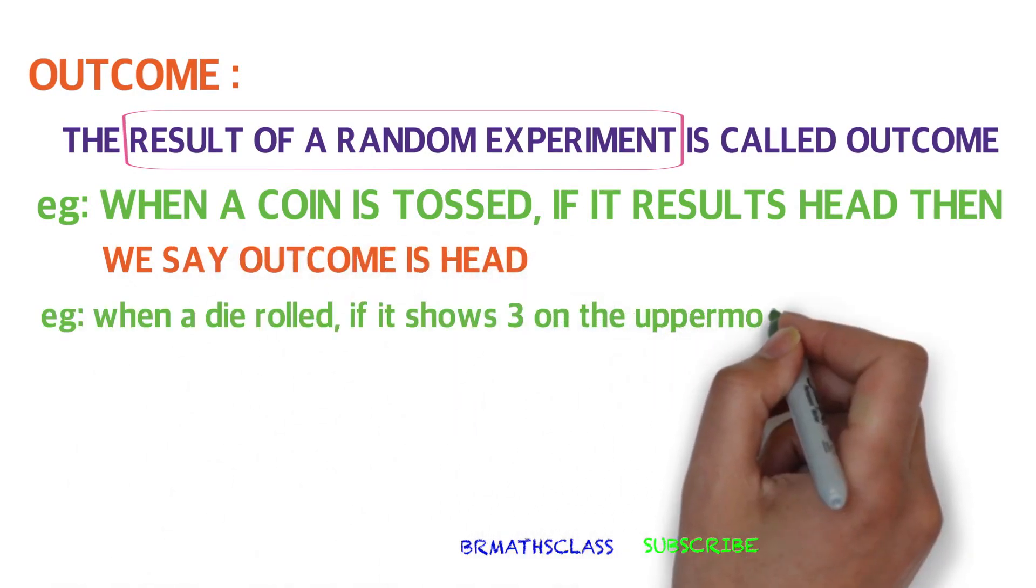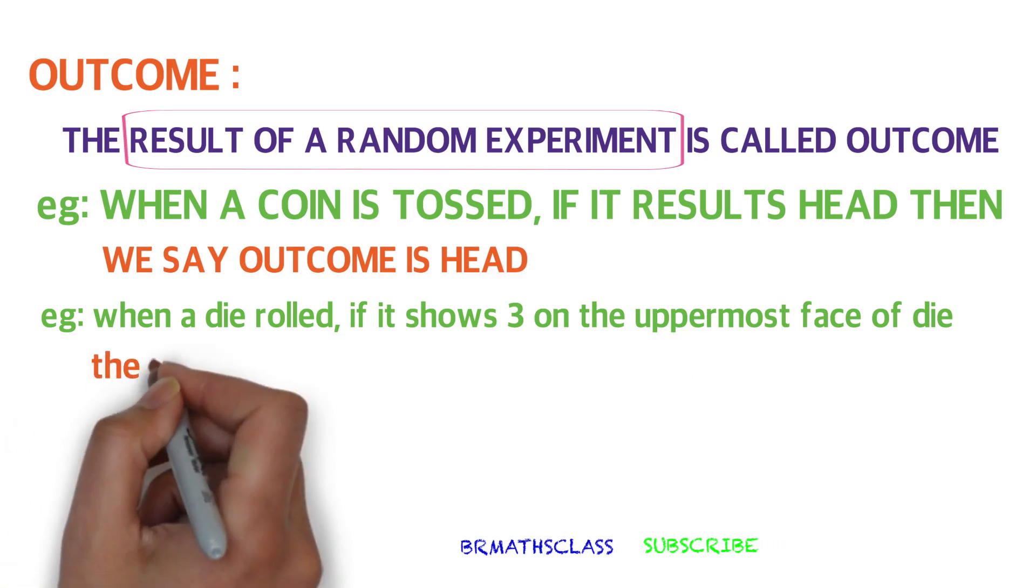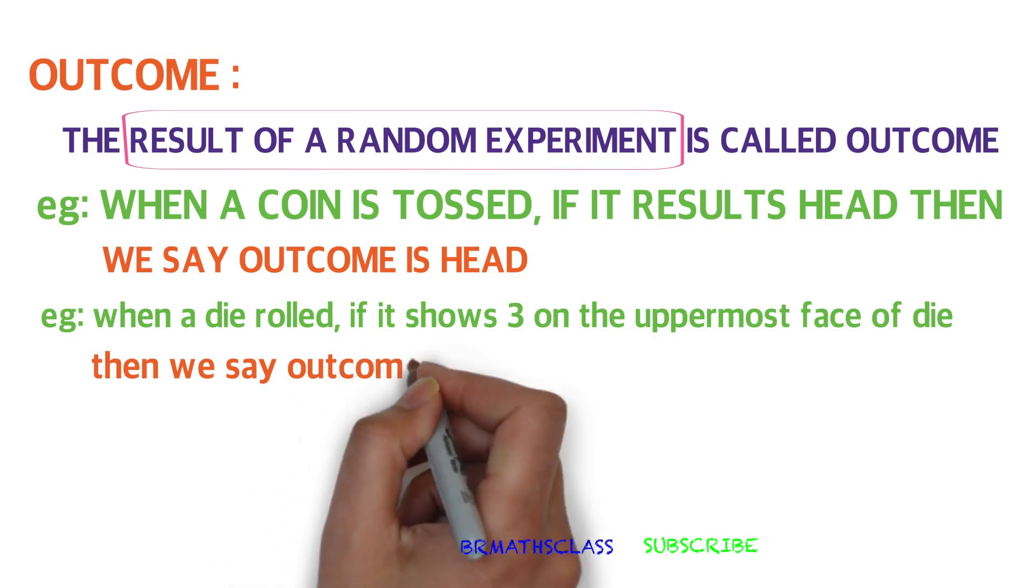Another example. When a die is rolled, if it shows 3 on the uppermost face of the die, then we say outcome is 3.